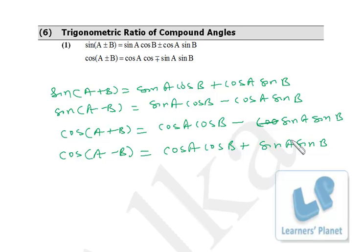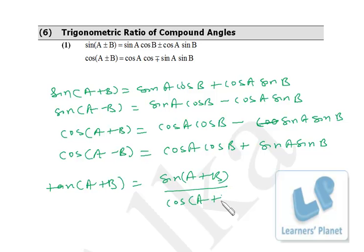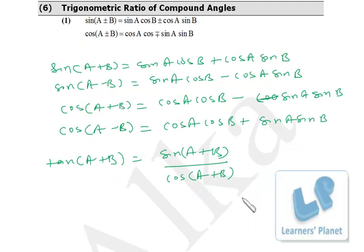Now using these four relationships we'll derive so many others. First of all, I try to find out tan(A+B). Now what is tan(A+B)? That is sin(A+B) over cos(A+B). Now what is sin(A+B)? That is sin A cos B + cos A sin B. And what is cos(A+B)? That is cos A cos B − sin A sin B.